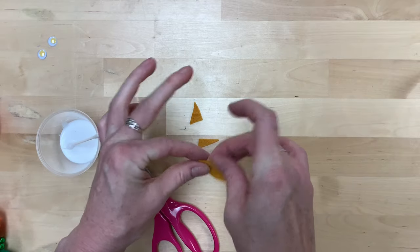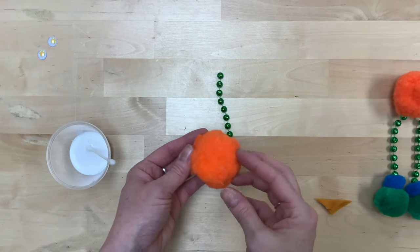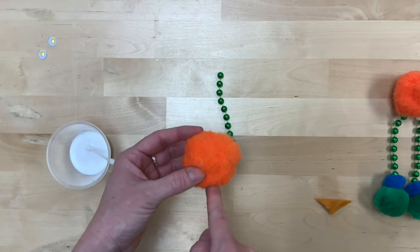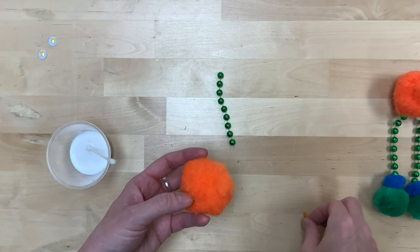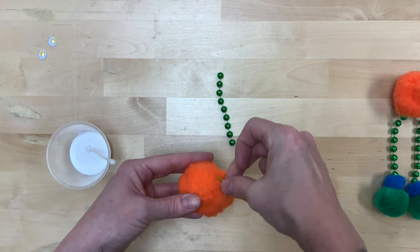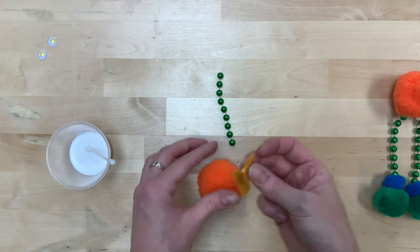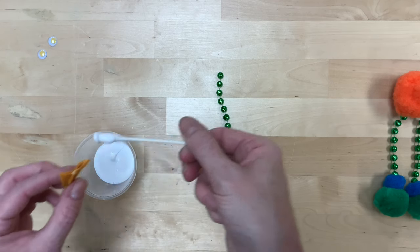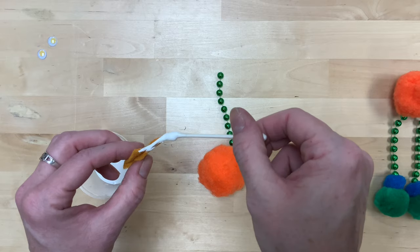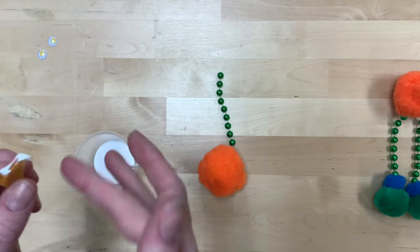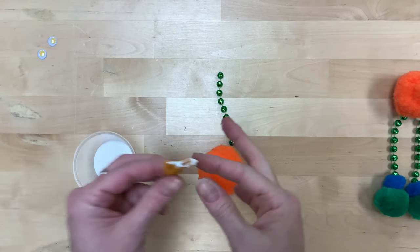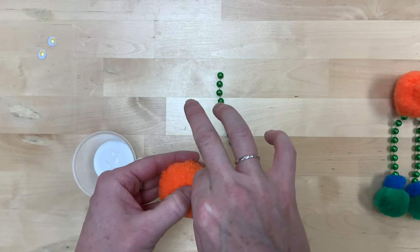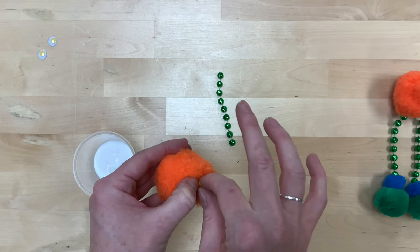Then I'm going to take that same end that has the glue on it, and I'm going to affix it to our second large pom-pom, which is going to be the head of our marionette bird. So find what you think is the front, and we will glue that right into position. Just kind of hold it in there for a little bit, and then you can let it set for a while.